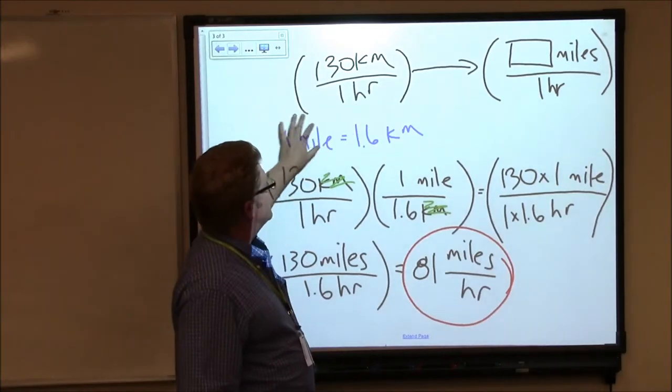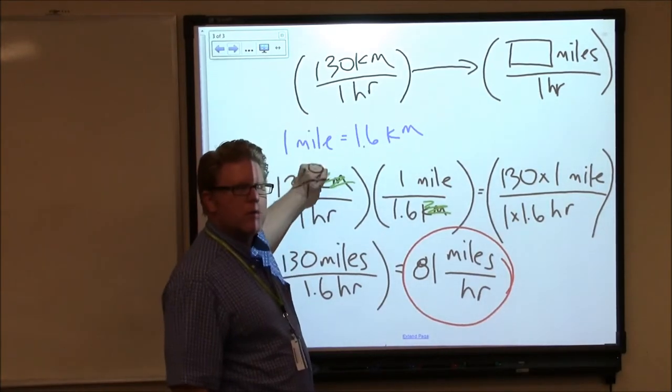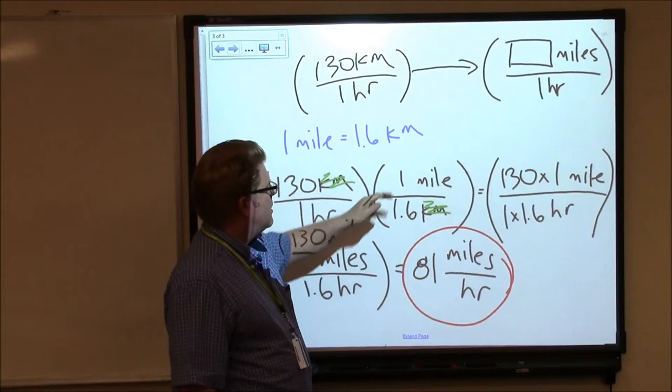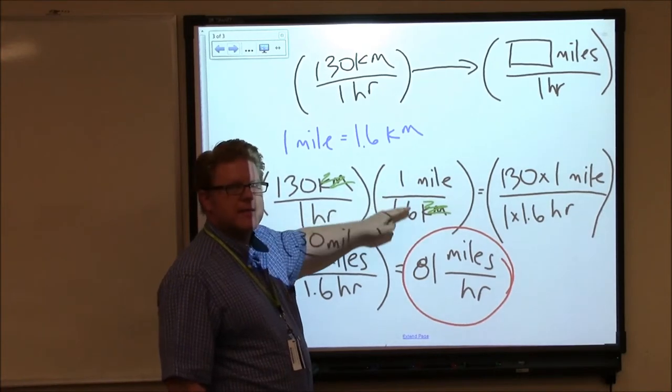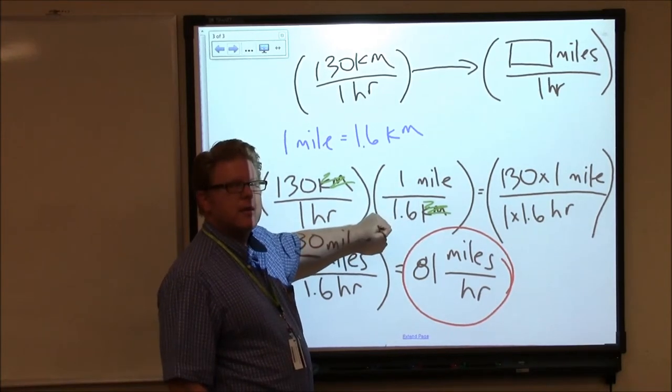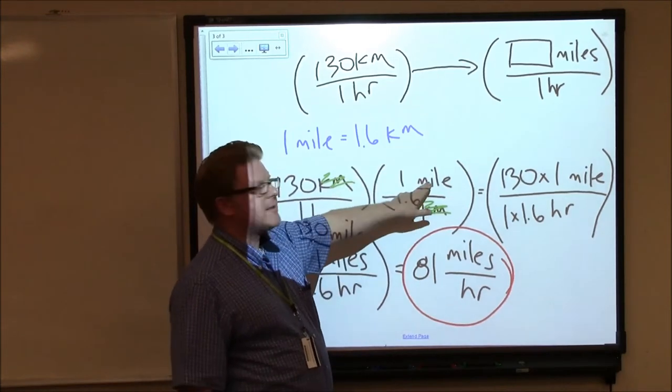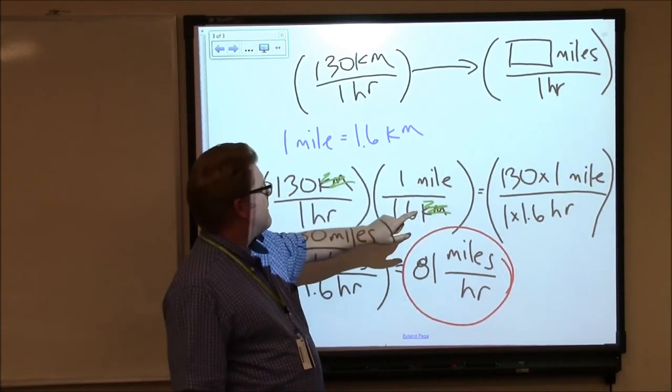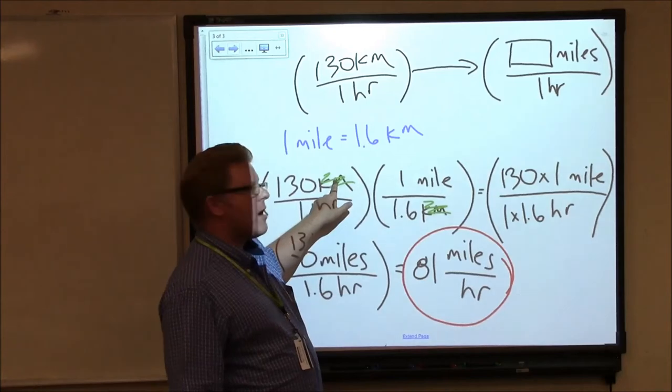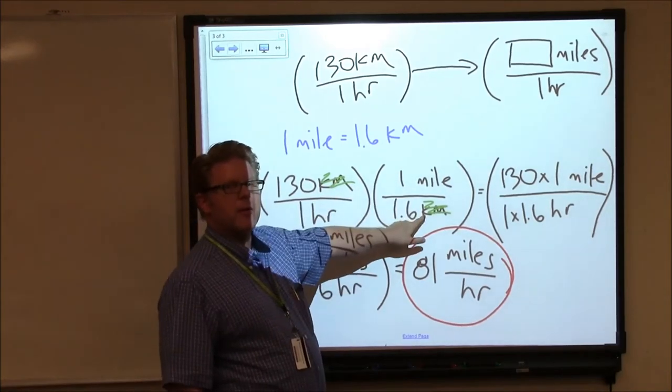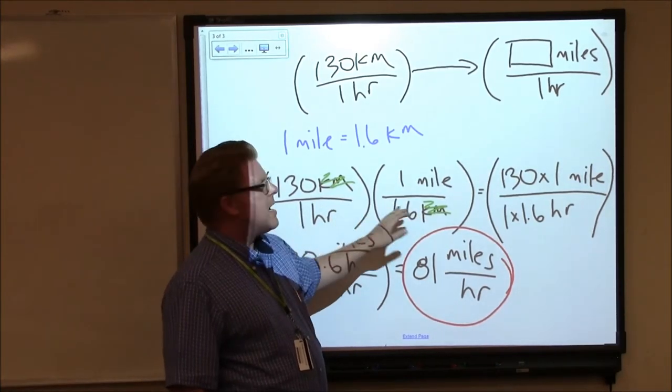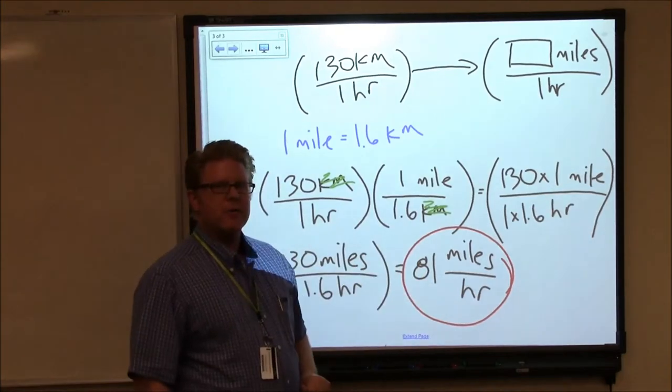All we did was use this known ratio in an order that makes sense that works for us because we knew we wanted to end with miles, so it makes sense to put mile on the top. It helps that with kilometer on the top, if we put kilometer on the bottom, those units cancel, and so we're left with miles per hour. That works out pretty well.